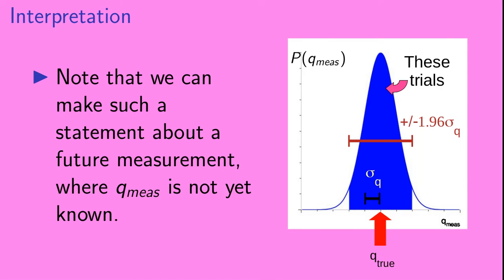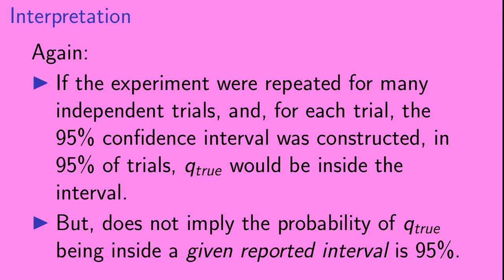The statement about there being a 95% chance of Q_true being inside the interval holds only when we look at all Q_measured values, not just the value from a single experiment, as it is not true for individual values of Q_measured. Note that we can make such a statement about a future measurement where Q_measured is not yet known and where we don't know if it falls inside or outside the blue band. To state it yet again: if the experiment were repeated for many independent trials and for each trial the 95% confidence interval was constructed, in 95% of trials Q_true would be inside the interval — but this does not imply the probability of Q_true being inside a given reported interval is 95%.